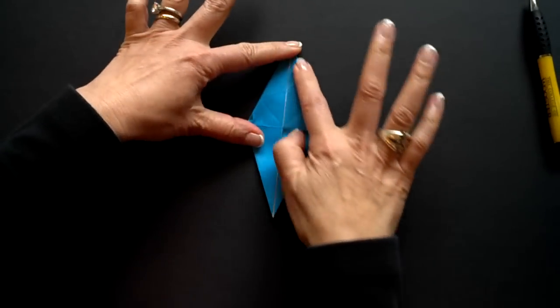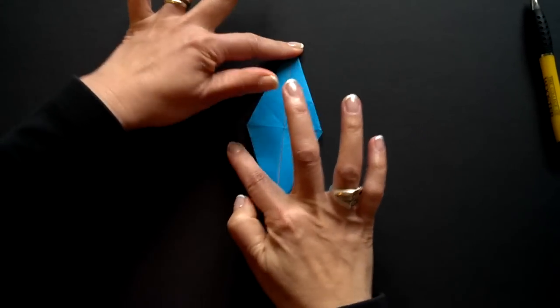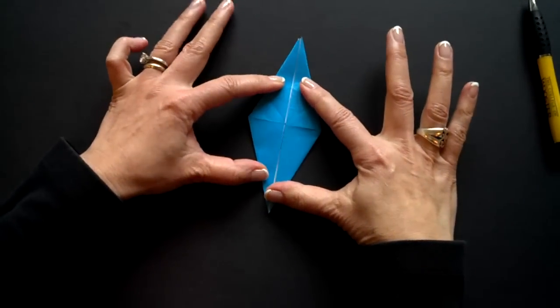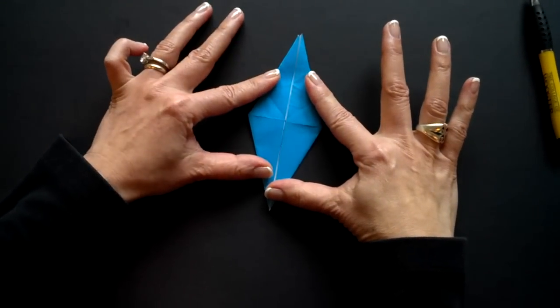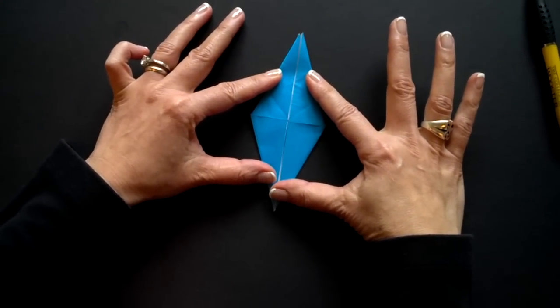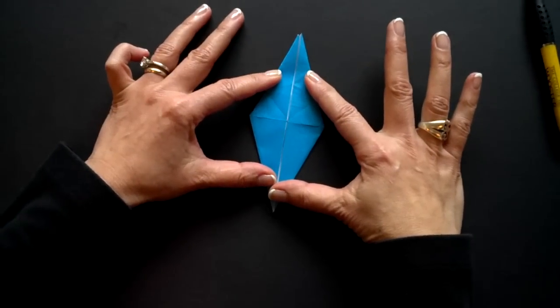And this along the side. Basic shape. First part of folding an origami crane.